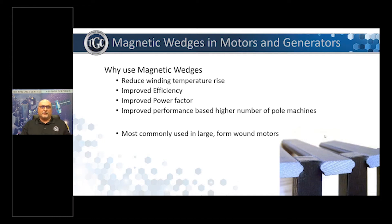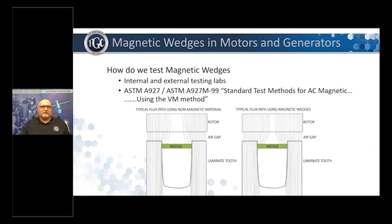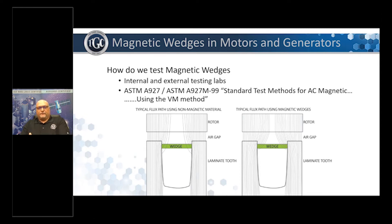When I talk about magnetic flux, how do we test for it? How do we test the wedges themselves? The company has done both internal and external tests on the materials and has written a white paper that talks about the differences in the flux path between a standard wedge on the left-hand side and what the flux path in theory looks like on the right-hand side. We test using ASTM 8927, which measures the permeability of the magnetic wedge materials in an AC machine.